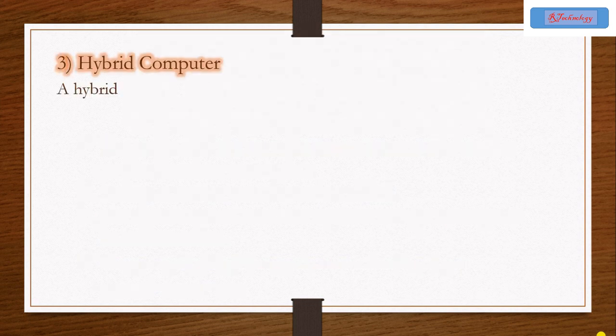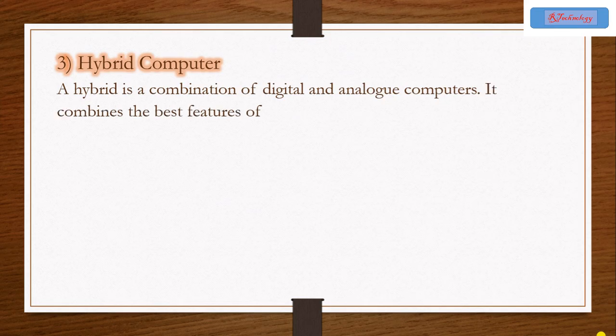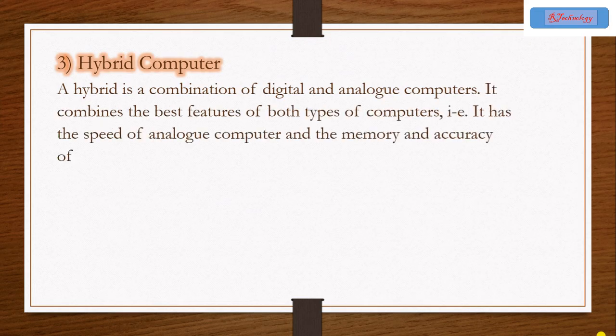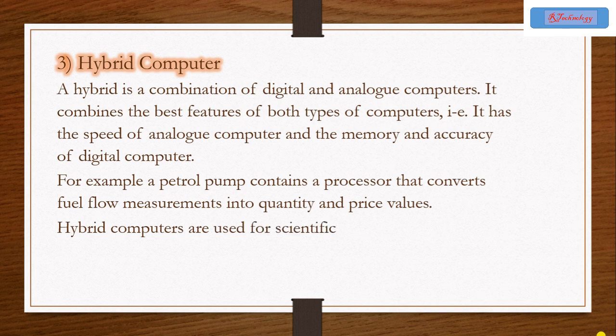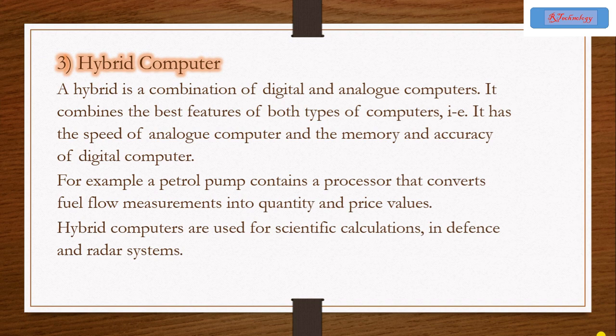Now we are going to learn about hybrid computer. A hybrid is a combination of digital and analog computers. It combines the best features of both types of computers. It has the speed of analog computers and the memory and accuracy of digital computers.